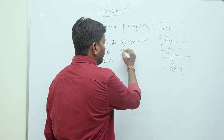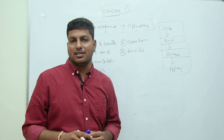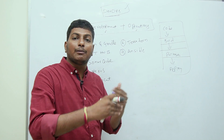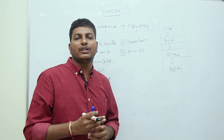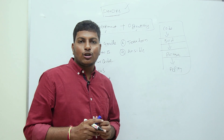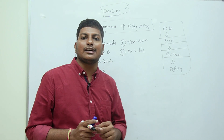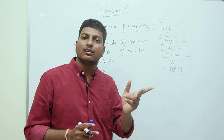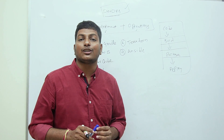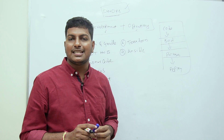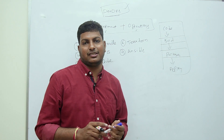Once infrastructure provisioning is completed, we need to manage configurations. For example, OS patching, installing Java software, upgrading Java versions, or installing Git client on machines. If our project uses 100 servers, installing Java manually on each one takes a lot of time. To automate configuration management in our infrastructure, we use Ansible. Terraform is used to create infrastructure; Ansible is used to manage configurations.